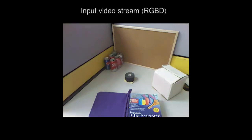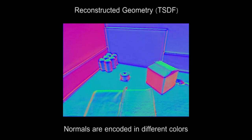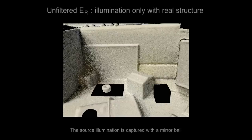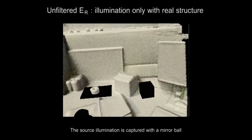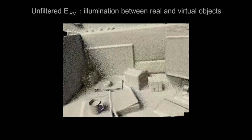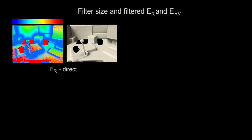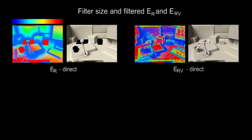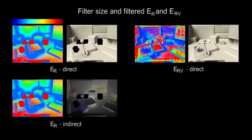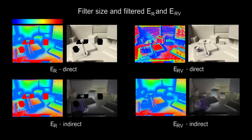In this video of a desk scene, we first show the reconstructed normals. Now we show the unfiltered and hence noisy illumination with only real objects, and with both real and virtual objects. Here are the filter sizes for the direct and indirect components and the resulting filtered images. Our main contribution is a derivation of filter sizes for environment illumination.